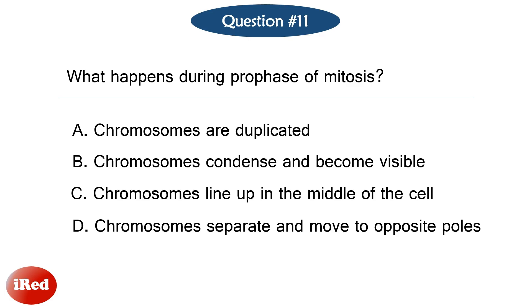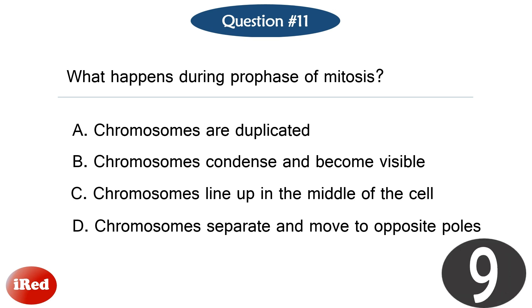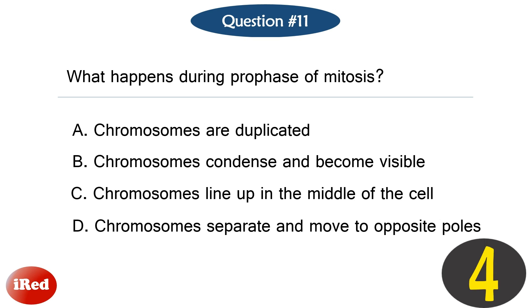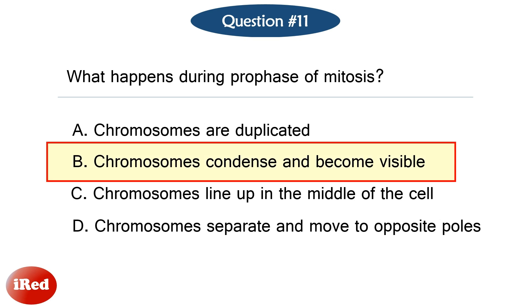Question number eleven. What happens during prophase of mitosis? The correct answer is letter B: chromosomes condense and become visible.